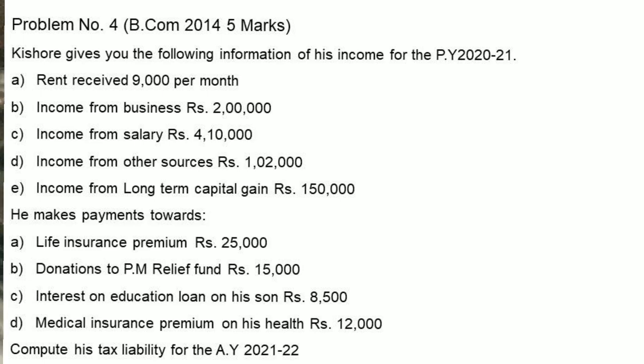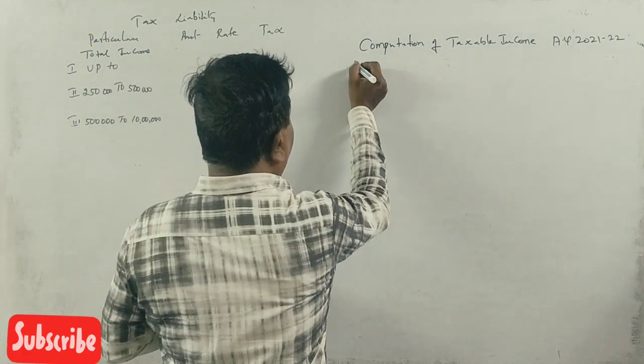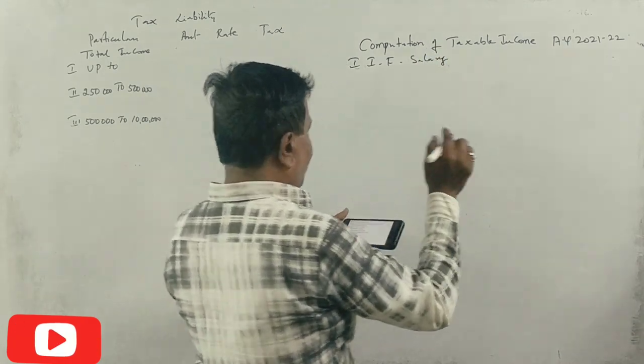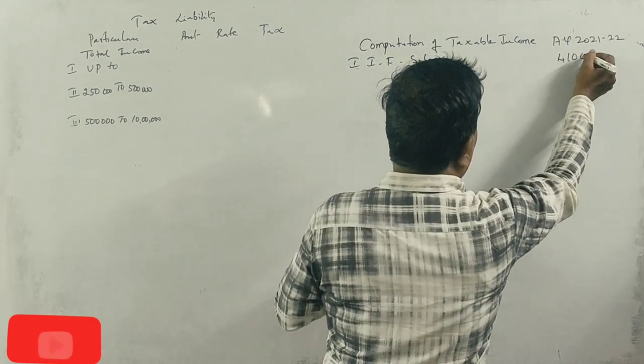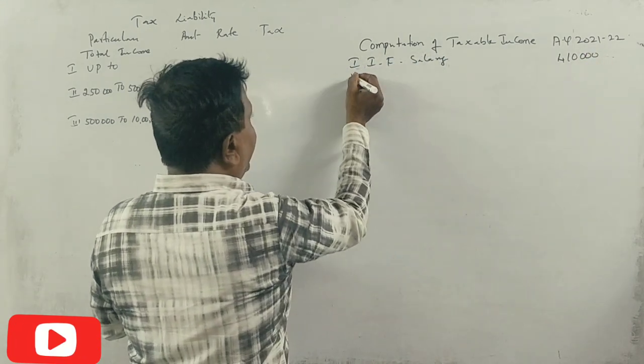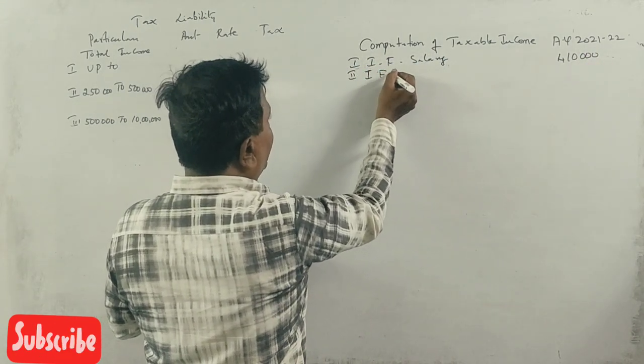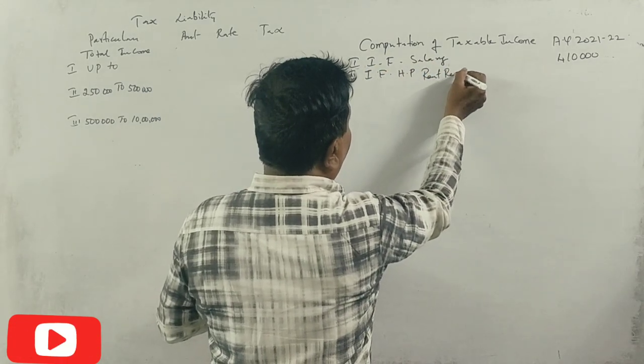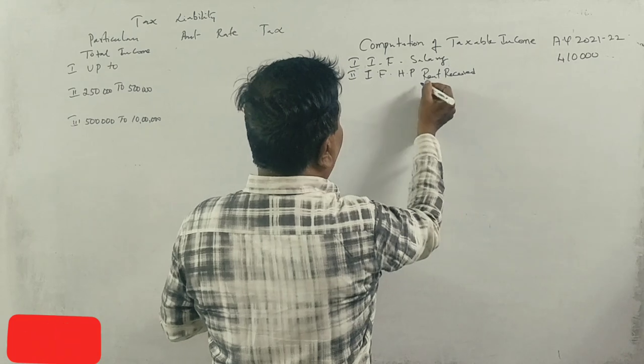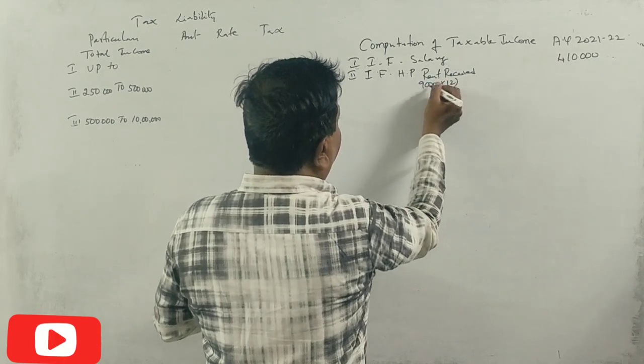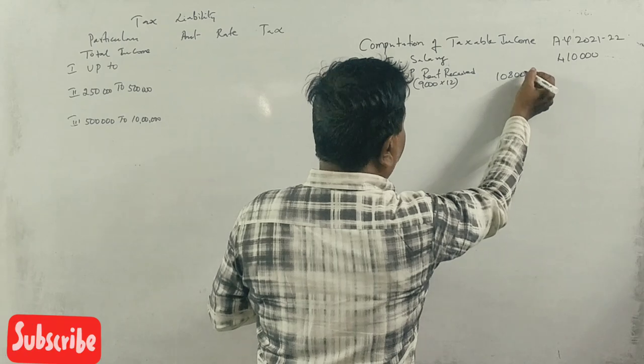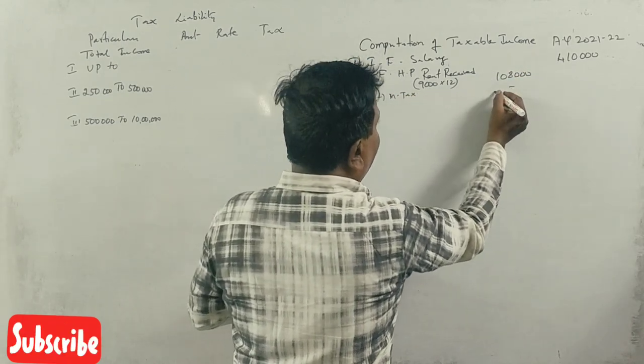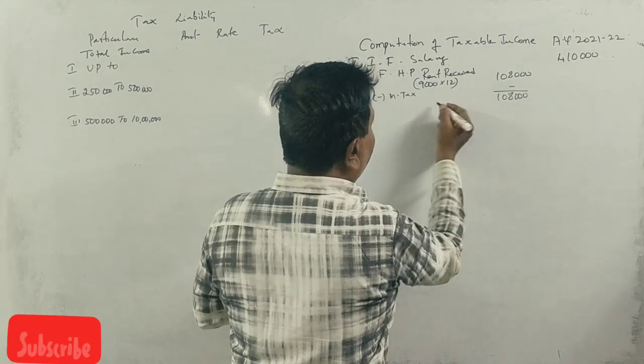First one is income from salary, which is 4,10,000. Next, income from house property. Rent received is 9,000 into 12, which is 1,08,000 per year.